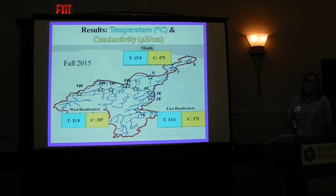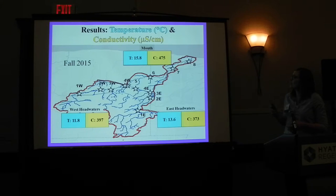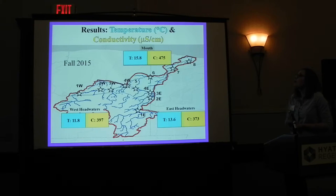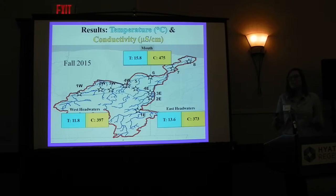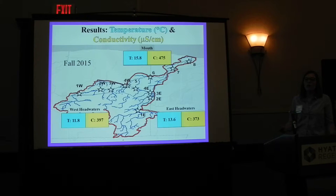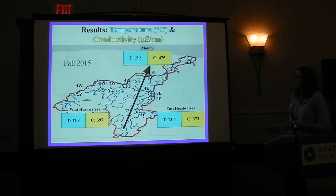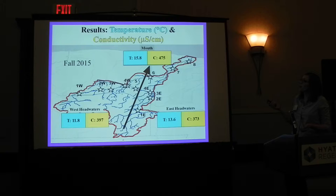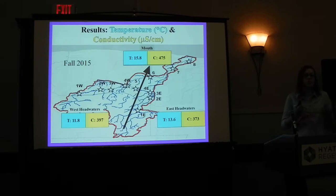So first, my water quality results. Temperature and conductivity can both be assessed throughout the river system. Temperature is predicted to be higher at the mouth of the river system. Conductivity is very hard to predict throughout the river system. I found that, in the fall, temperature and conductivity were both higher at the mouth of the river system, so temperature followed that prediction.